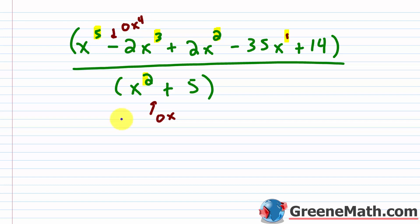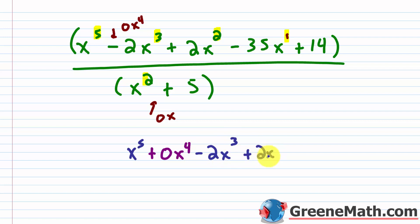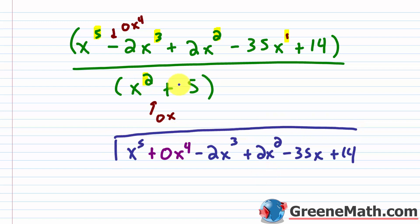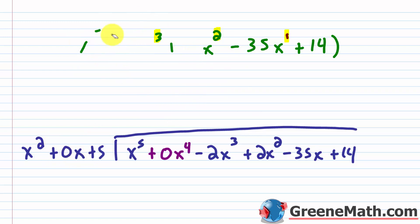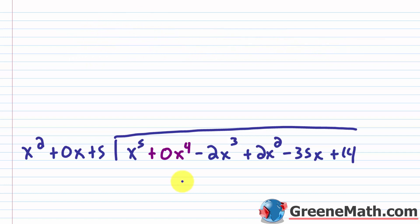So I'm going to rewrite this as x to the fifth power plus 0x to the fourth power minus 2x cubed plus 2x squared minus 35x plus 14. That will be my dividend. And for the divisor, I'll write x squared plus 0x plus 5.